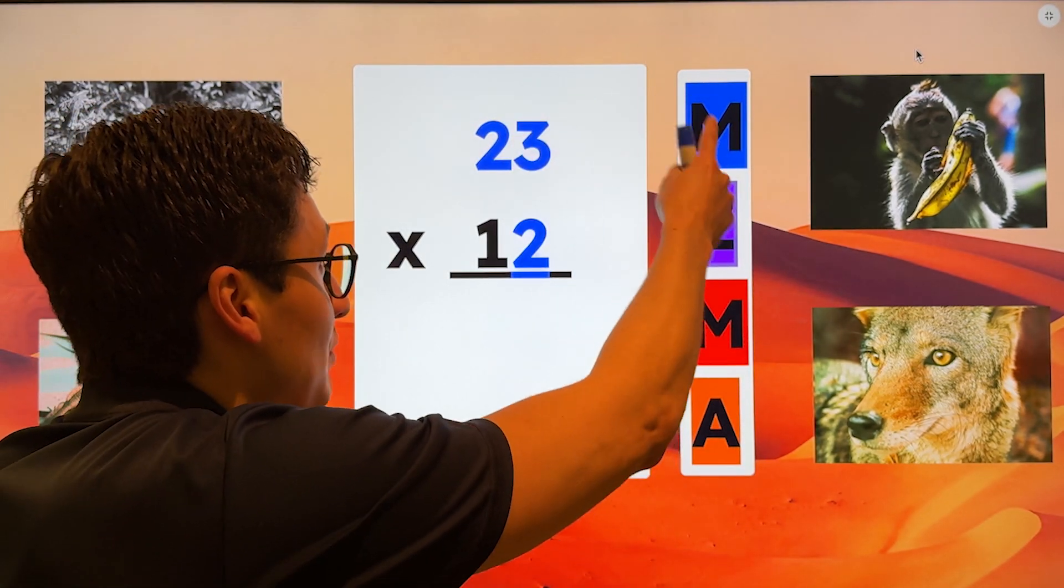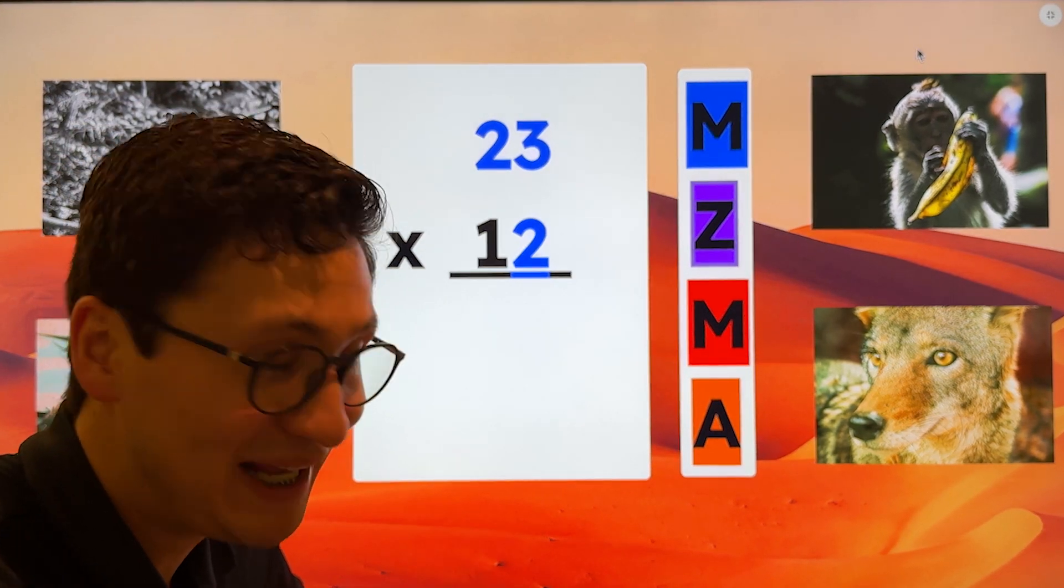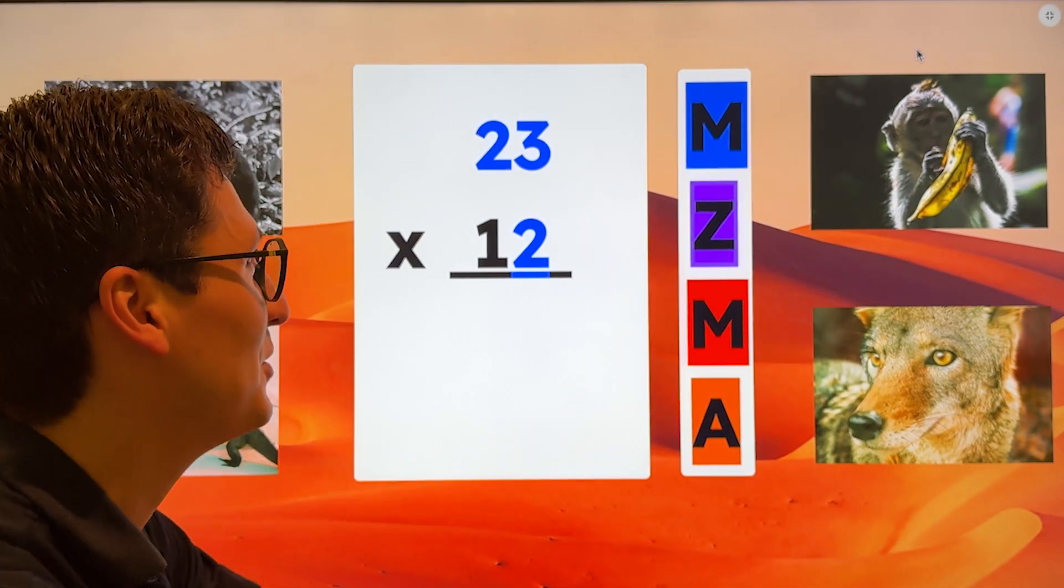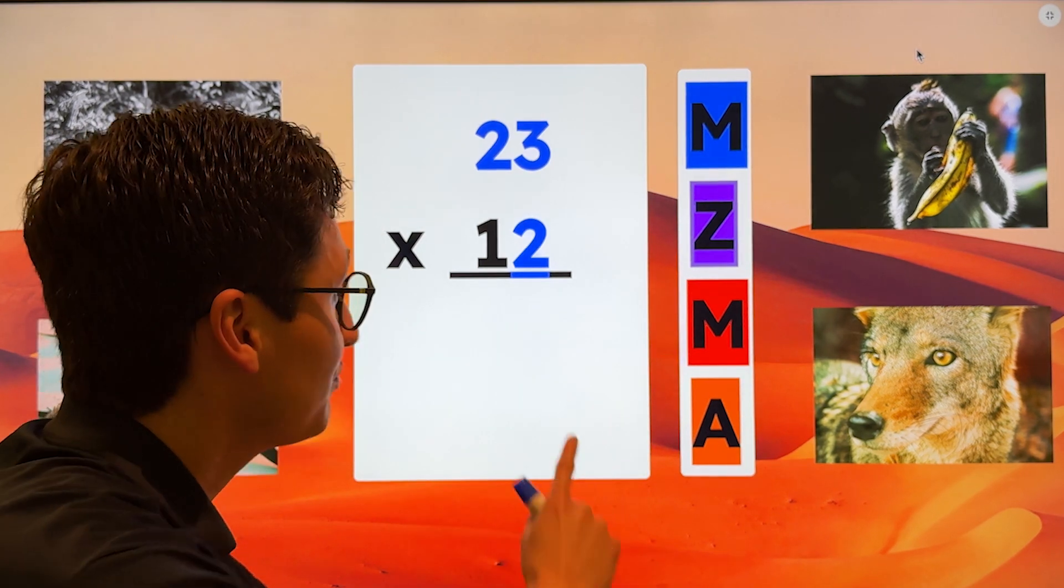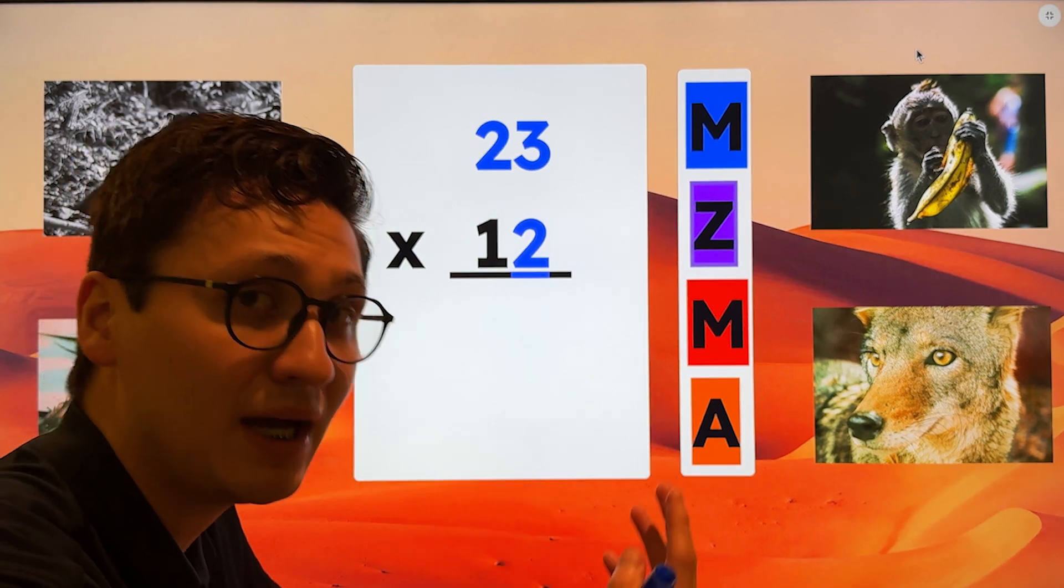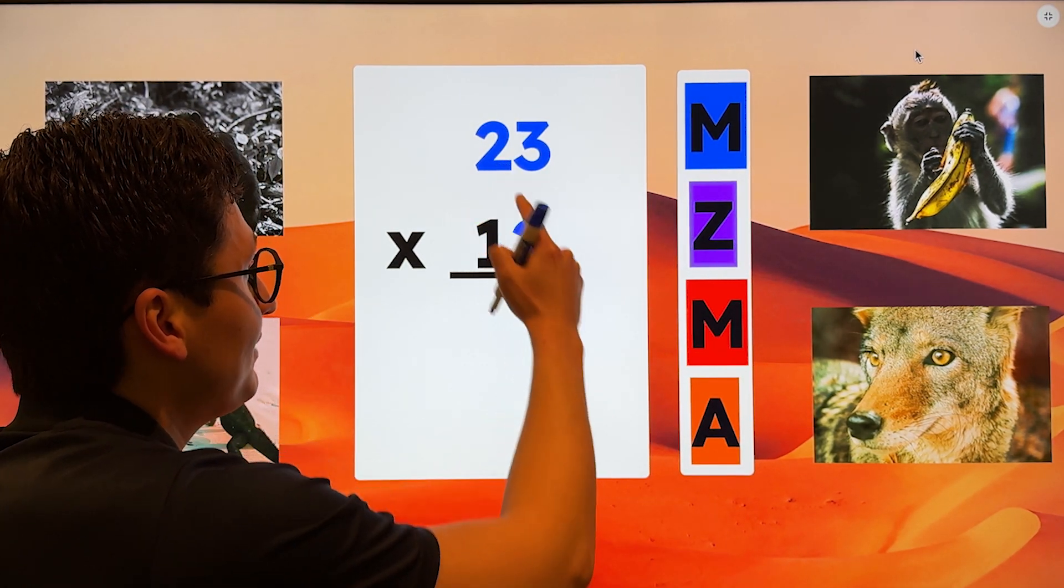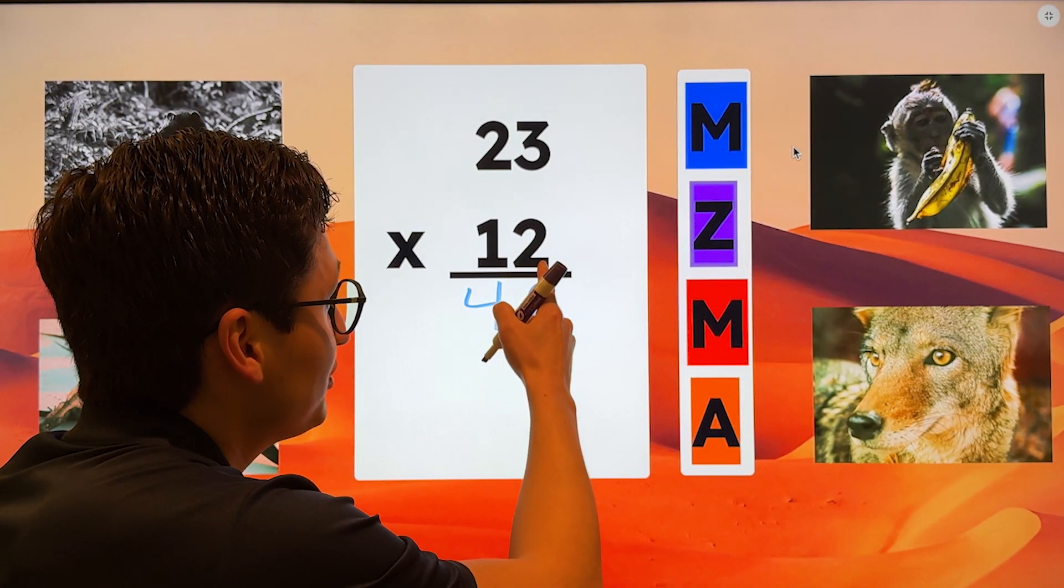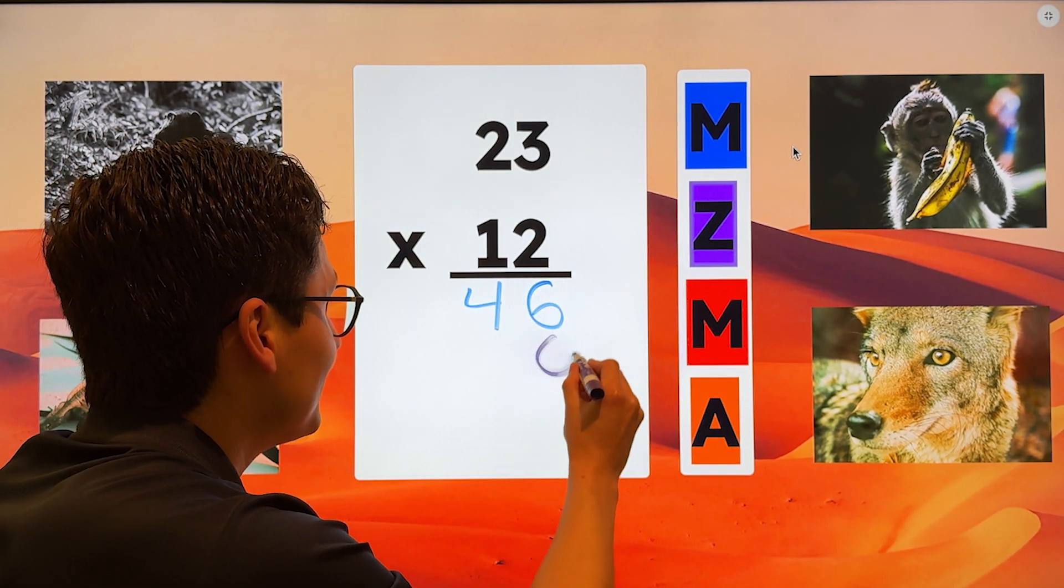The first thing we need to do is multiply. First step is multiply. You're going to get the number that is in the ones place, which right now is a two, and you're going to multiply it with all the numbers that are on top. So two times three is six. We go on to our tens place. Two times two is four. So now that I'm done multiplying the two, in order for me to multiply the one, I have to add a zero.